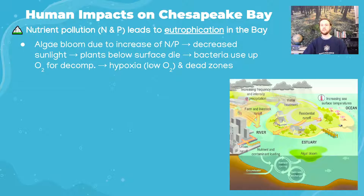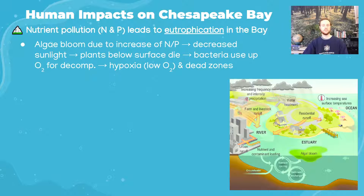When submerged plants die from lack of sunlight, bacteria begin to break them down. Because decomposition is an aerobic process, it uses up oxygen — those bacteria consume oxygen that other organisms need to survive, leading to more organisms dying. This creates a positive feedback loop where more and more oxygen is consumed and more organisms die, leading to hypoxia — extremely low oxygen levels — and potentially a dead zone where very little life can be supported.